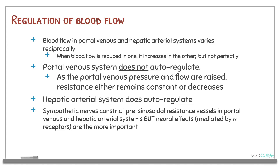Blood flow into the portal venous and hepatic arterial systems uses various reciprocal mechanisms, such that when blood flow is reduced in one, it increases in the other. The portal venous system does not autoregulate — as portal venous pressure and flow are raised, resistance either remains constant or decreases. The hepatic arterial system also lacks autoregulation. Sympathetic nerves constrict the presinusoidal resistance vessels in both the portal venous and hepatic arterial systems, but the neural effects mediated by alpha receptors are more important in this case.